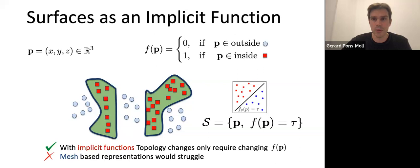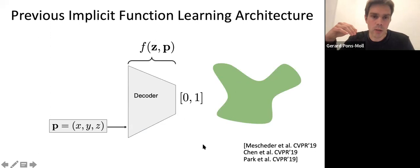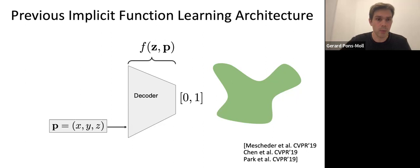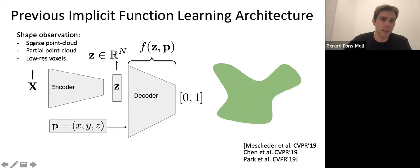Three papers came up in 2019 that basically implemented this using a neural network. The idea is to train a neural network that classifies points as being inside or outside the surface — this network will implicitly represent the surface. We're typically not interested in memorizing a single shape, but conditioning on some sort of input, which might be a sparse point cloud, partial point cloud, an image, or low-resolution voxels. This is encoded into a latent vector Z, and then a function takes the latent vector Z and point coordinates and classifies those coordinates as inside or outside.